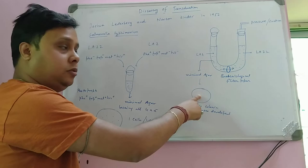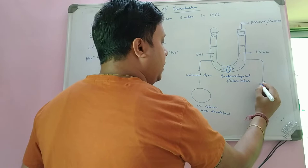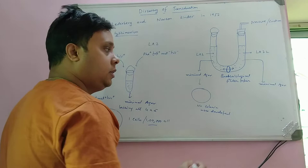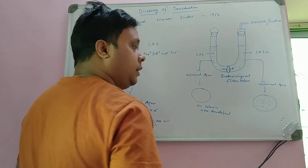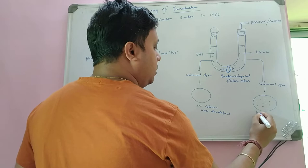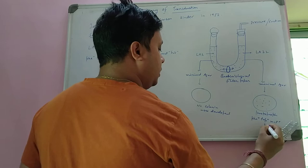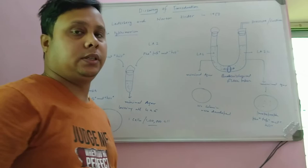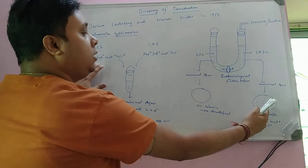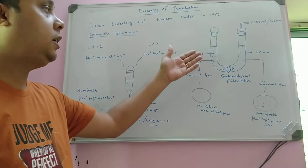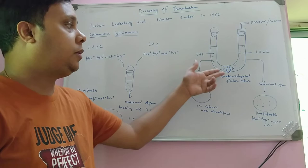But when they took media from the right side and plated it again on minimal agar lacking all four amino acids, several colonies developed. Those colonies should be prototrophic — phenylalanine plus, tryptophan plus, methionine plus, and histidine plus. So how did LAT22 become recombinant? There must have been some recombination event, because LAT22 lacks phenylalanine and tryptophan, yet it was obtaining those genes — which must have come from LAT2, since LAT2 contains phenylalanine and tryptophan. But LAT2 cannot directly transfer these genes across the filter.